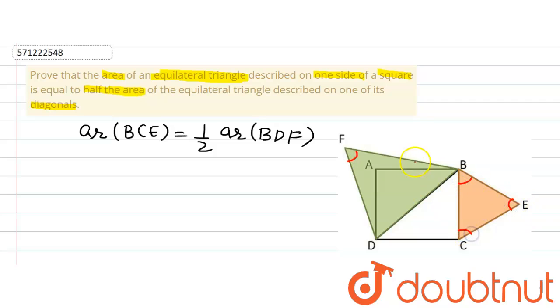That means all the three angles of both the triangles are equal to each other. So by angle-angle similarity criteria we can say that triangle BCE is similar to triangle BDF.